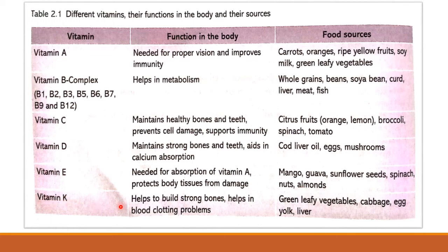Vitamin K helps to build strong bones and helps with blood clotting. When we get a cut, blood flows out; blood clotting is when the blood becomes semi-solid and stops flowing. Vitamin K helps in this clotting process so blood does not keep flowing. Food sources of vitamin K are green leafy vegetables, cabbage, egg yolk and liver.